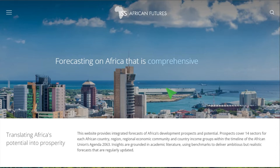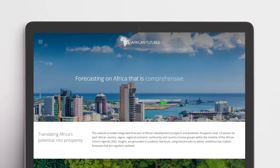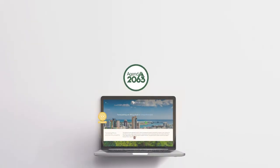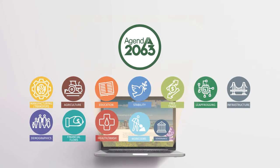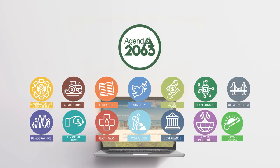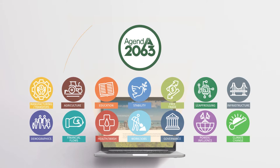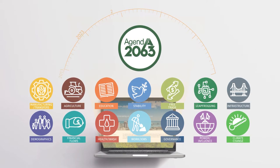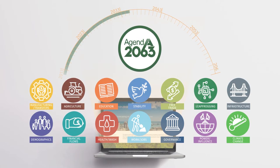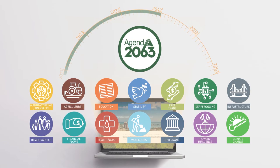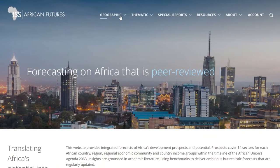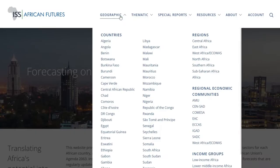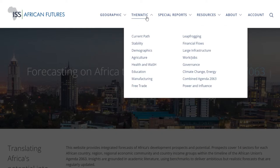This website models potential progress towards the African Union's Agenda 2063 vision through the individual and combined impact of various sectoral scenarios. The forecasting horizon coincides with the end of the third 10-year implementation plan of Agenda 2063 in 2043. You can view the future of Africa geographically or thematically.